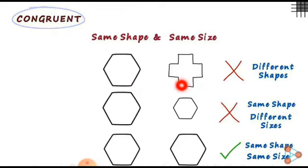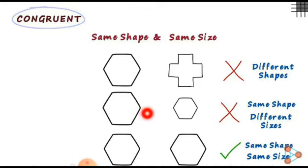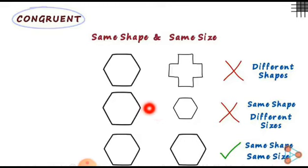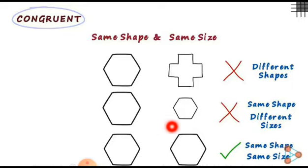Now check these figures — both figures are different shapes, so they are not concurrent figures. Now check the second example: these figures are the same shape but different size, so they are not concurrent. These shapes are similar but not concurrent.